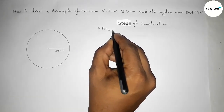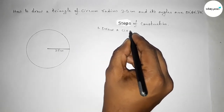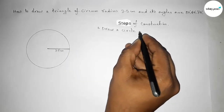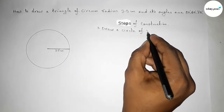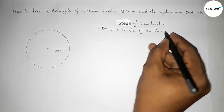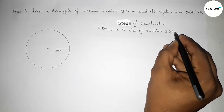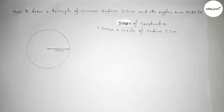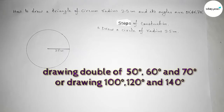Step number one: we have to draw a circle of radius 3.5 centimeters using a compass. Next, we have to draw double of 50, 60, and 70 degrees — that means we have to draw 100, 120, and 140 degrees at the center of the circle.